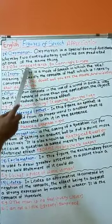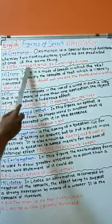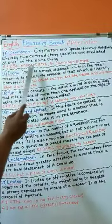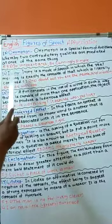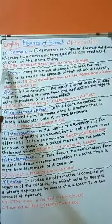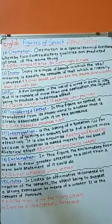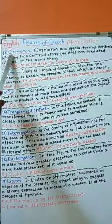So here you can observe, innocent and cunning. These two words are actually opposite words in meaning, have come together in the same sentence. Therefore, it is called oxymoron.